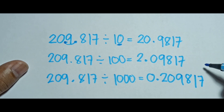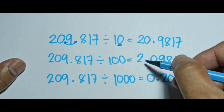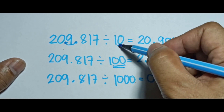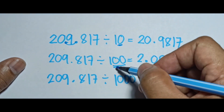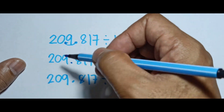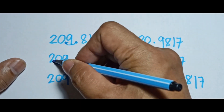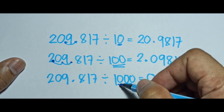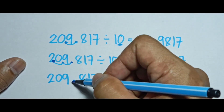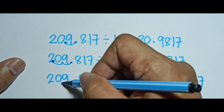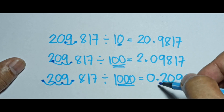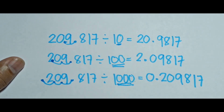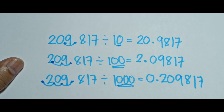Isn't it easy compared to the traditional way? For 209.817 ÷ 100, in 100 you have two zeros, so we move the point going to the left twice — one, two — giving us 2.09817. For 1000, you have three zeros, so we move the point three times going to the left — one, two, and three — giving us 0.209817.